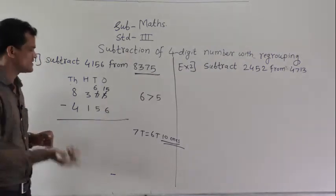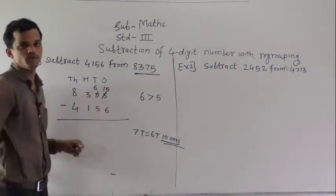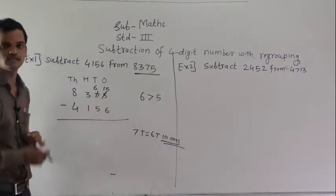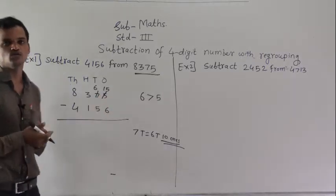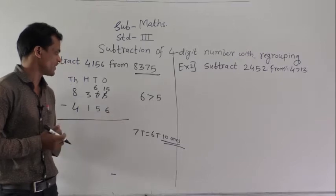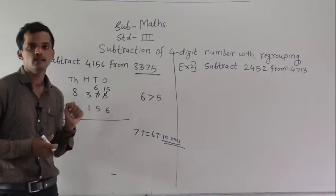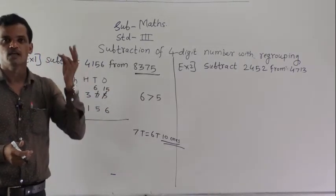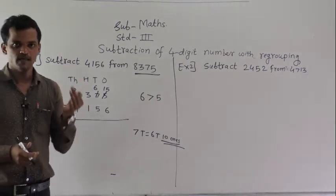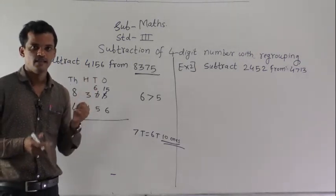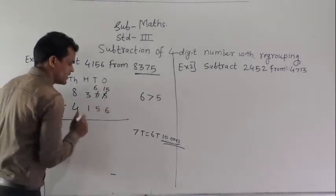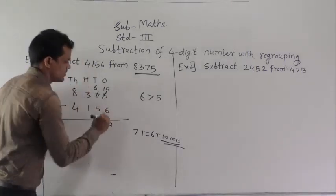Now you can subtract 6 from 15. So 15 minus 6 — by using backward counting you can subtract: 14, 13, 12, 11, 10, 9. So 15 minus 6 equals 9.